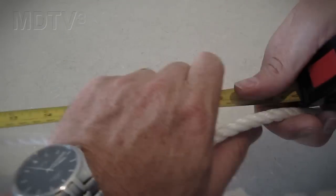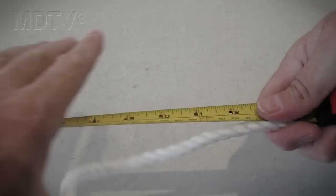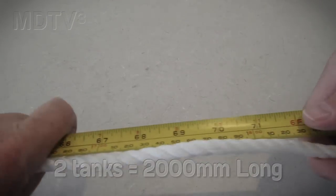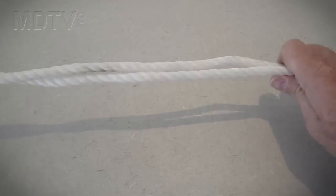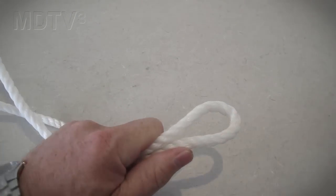Measure out and cut a length of rope two meters long. Any excess will be cut off later. Tape the rope end tight to make it easy to push through the holes. Fold the rope in half and mark the center of the rope with tape.